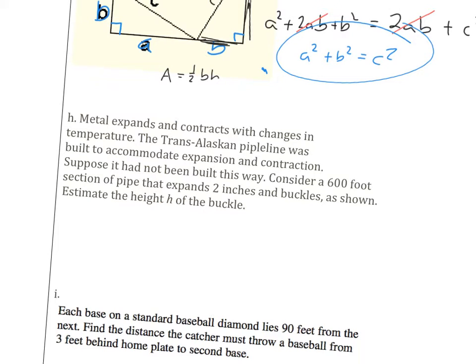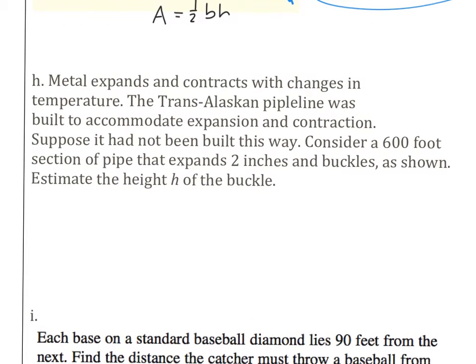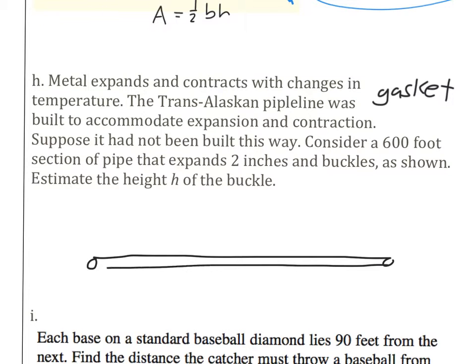So what we want to do is walk through an application of this and see where Pythagorean theorem is used. So taking a gander here. Metal expands and contracts with changes in temperature. So as it gets hotter, metal expands. And as it gets colder, metal will shrink down. Your hands kind of do the same thing in terms of feeling rings on them. All right, so the Trans-Alaskan pipeline was built to accommodate expansion and contraction. In other words, they put little rubber gaskets every, I don't know, 100 feet or something. And so it's kind of this springy little gasket. All right, if it hadn't been built that way, consider a 600-foot section of pipe.